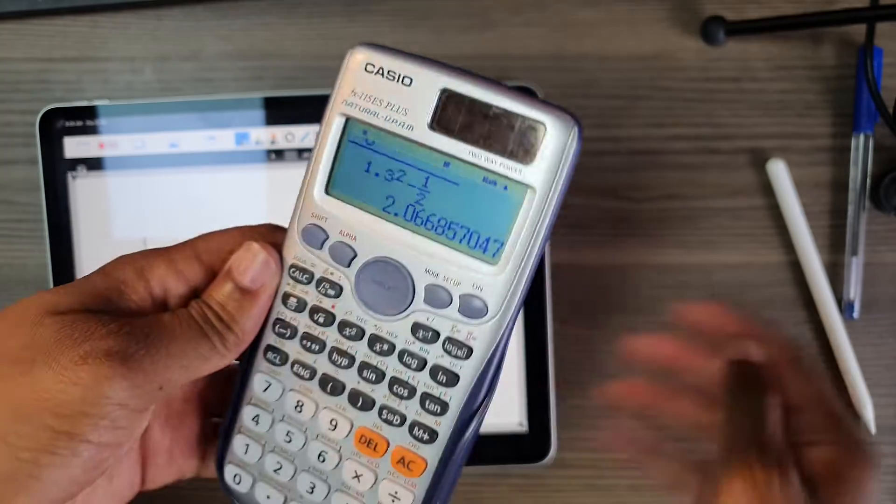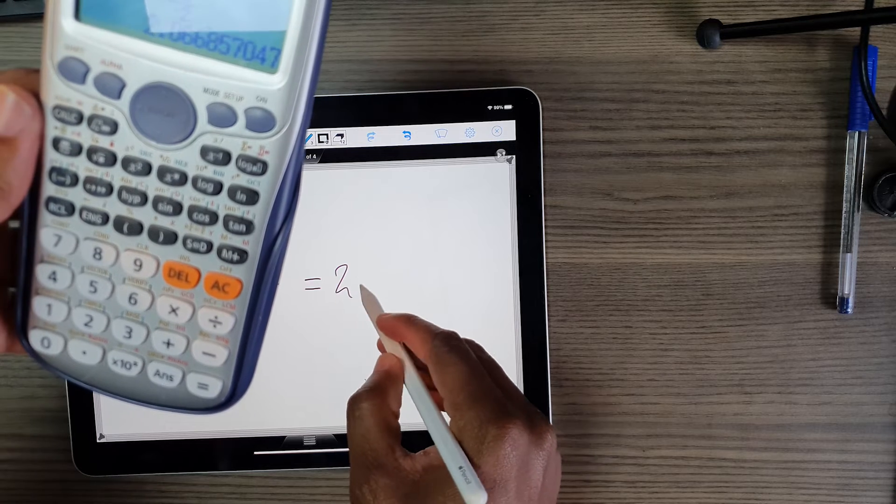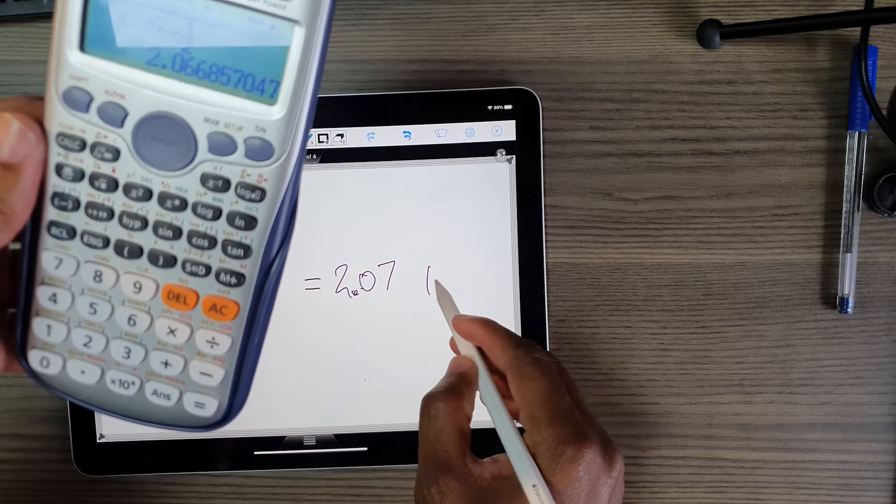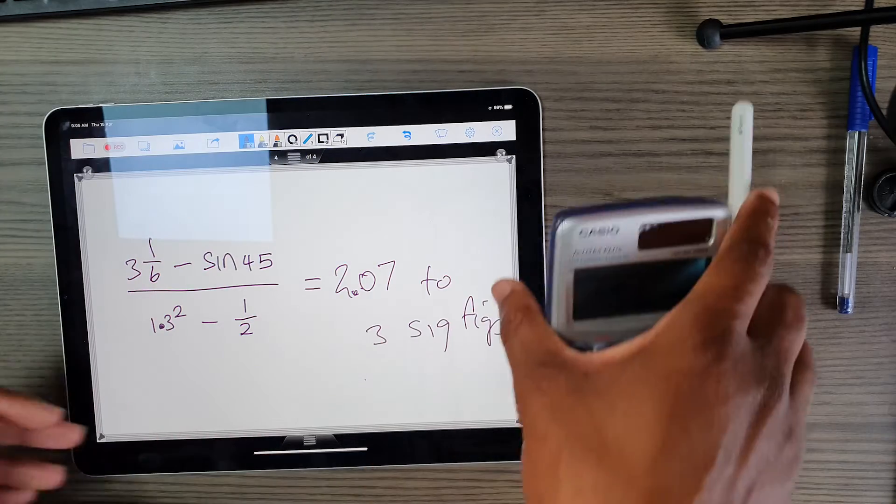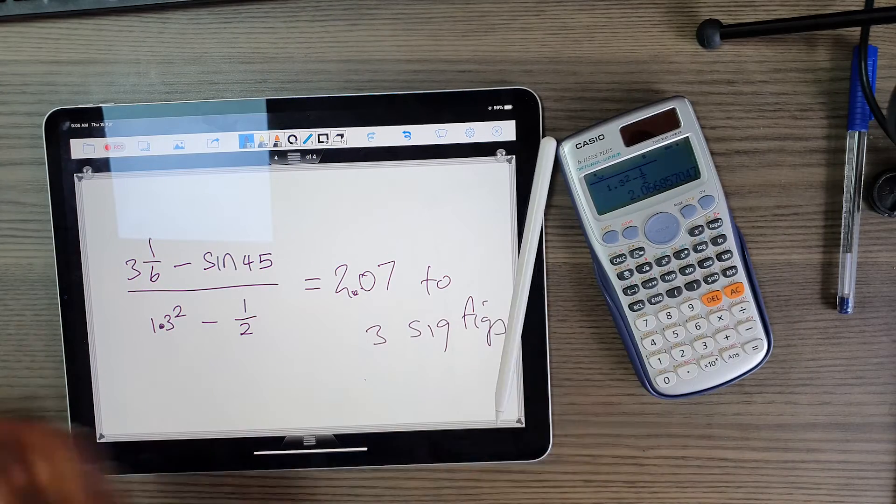Then scroll up a little bit and you get your answer at 2.07 to 3 significant figures.